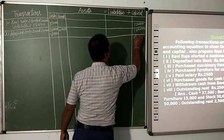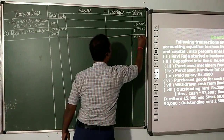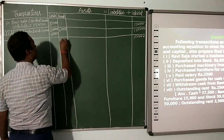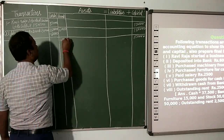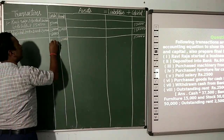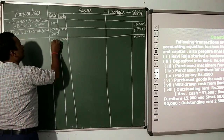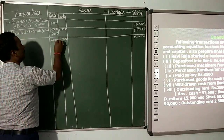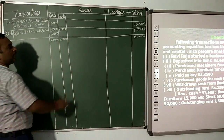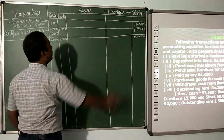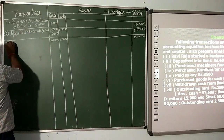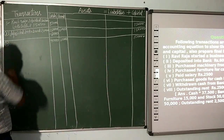After closing transaction 2: cash balance is 90,000, bank balance is 60,000, total assets = 1,50,000. Capital is 1,50,000. Asset is equal to liability plus capital. Now the third transaction: machinery purchased on credit from Mahaq Rs. 50,000.